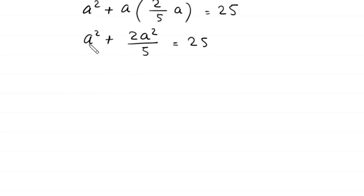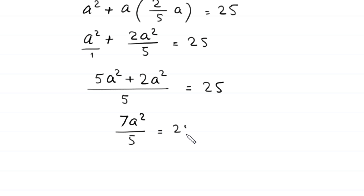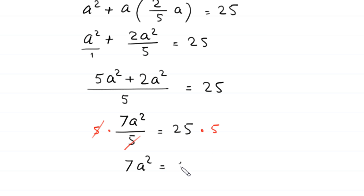We take the LCM of 1 and 5, which is 5. Dividing 5 by 1 gives 5, so 5 times a squared gives 5a squared. Plus, 5 divided by 5 is 1, times 2a squared gives 2a squared. So 5a squared plus 2a squared gives 7a squared divided by 5 is equal to 25. Multiplying both sides by 5, the 5 cancels and we get 7a squared is equal to 25 times 5, which is 125.